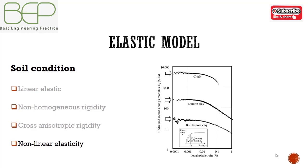It is convenient to use the non-linear modulus as the secant stress-strain curve and normalize it by the initial effective stress in the specimen at the beginning of the test. The decrease in stiffness between 0.01% and 0.1% strain is also necessary to capture.